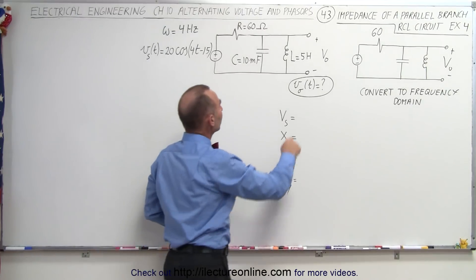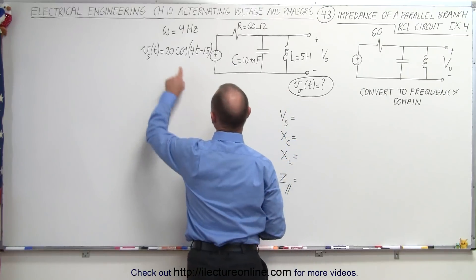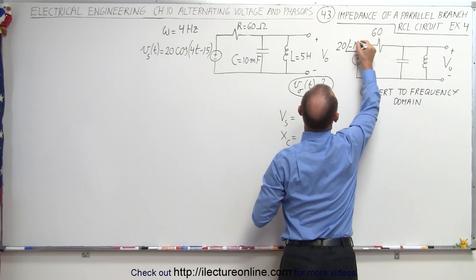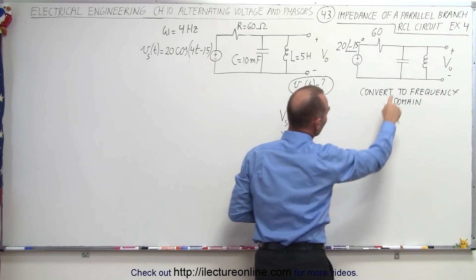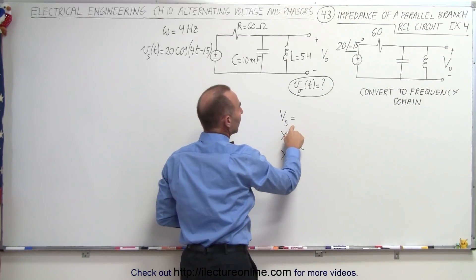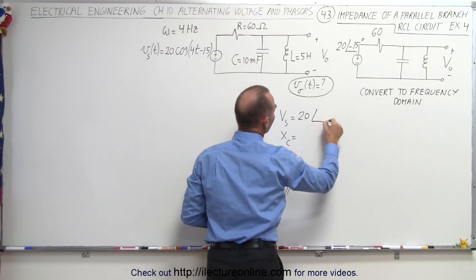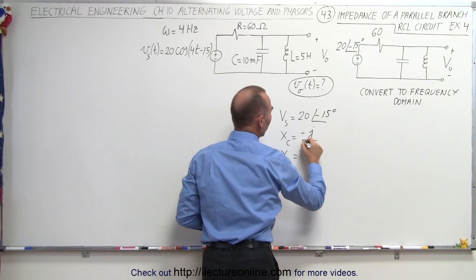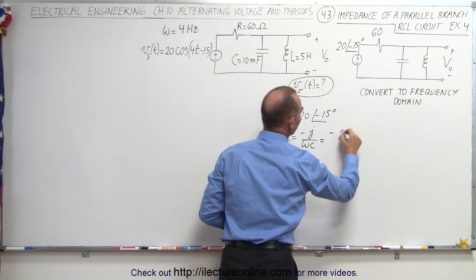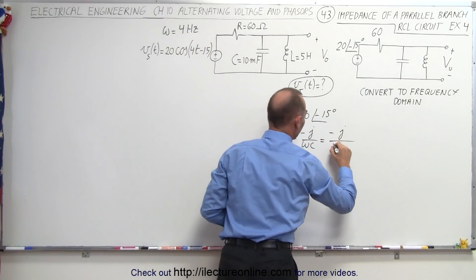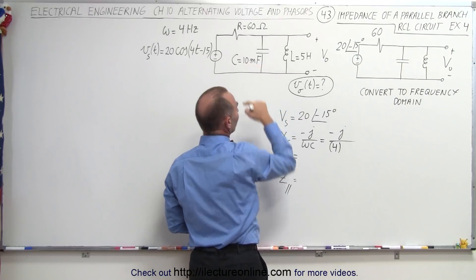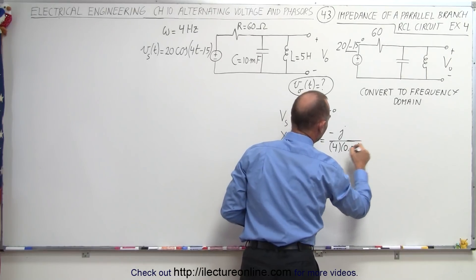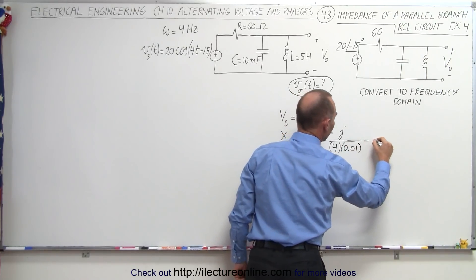To make it easier, we're going to convert from the time domain into the frequency domain first. The resistor is simply equal to 60. On the input source we have a maximum voltage and a phase angle, so the input voltage will be 20 with a phase angle of minus 15 degrees. For the capacitor, X_c equals minus j over omega C, which equals minus j divided by omega. The frequency is 4 hertz and the capacitance is 10 millifarads, which is 0.01 farads, giving 0.04 — take the inverse and that's minus j25.